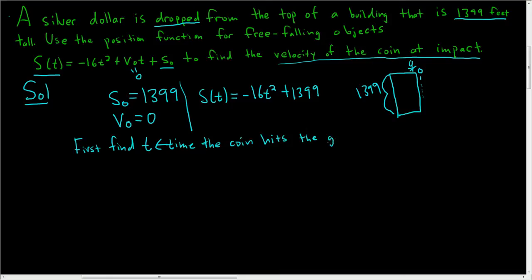Once we know the time that the coin hits the ground, we can take the derivative of the position function, which gives us the velocity function, and just plug in the time. So let's think about how to find the time that the coin hits the ground.